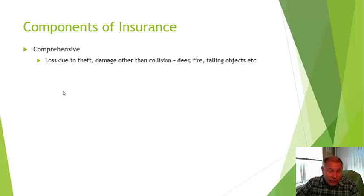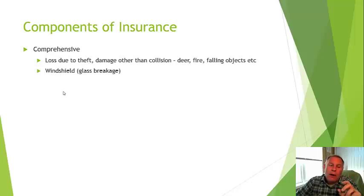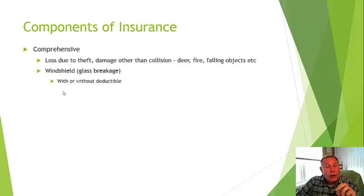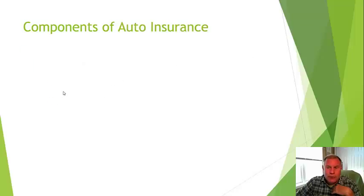Comprehensive covers losses due to theft or damages other than collision — deer, fire, falling objects, and so on. It covers your car if somebody steals it or a tree falls on it. Also included is windshield or glass breakage; many insurance companies offer no deductible on windshields and will send someone out to fix it. Comprehensive is not required in New York State, but most people do have it.